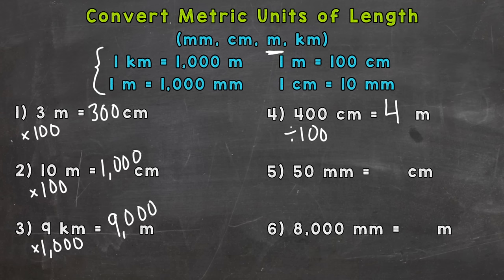Number five: millimeters to centimeters. There are 10 millimeters in every centimeter, so we need to divide by 10, or split into groups of 10 — each group of ten is a centimeter. So 50 divided by 10 gives us five centimeters. Millimeters to centimeters: divide by 10.